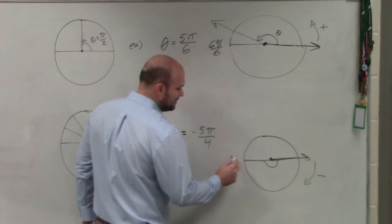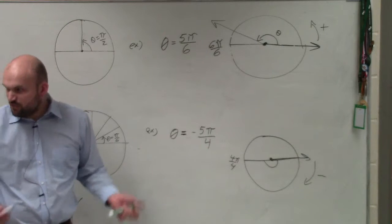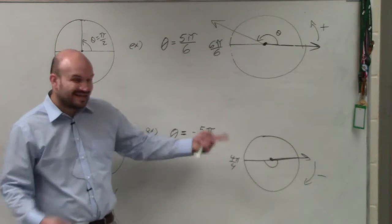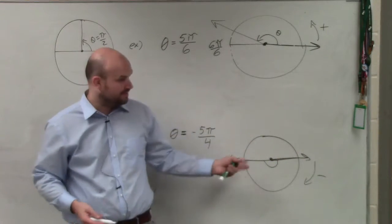Again, halfway around the circle is 4 pi over 4, right? It's 4 pi over 4. But again, we're going in the negative direction. So all the negative direction means is we're just going in this clockwise direction.